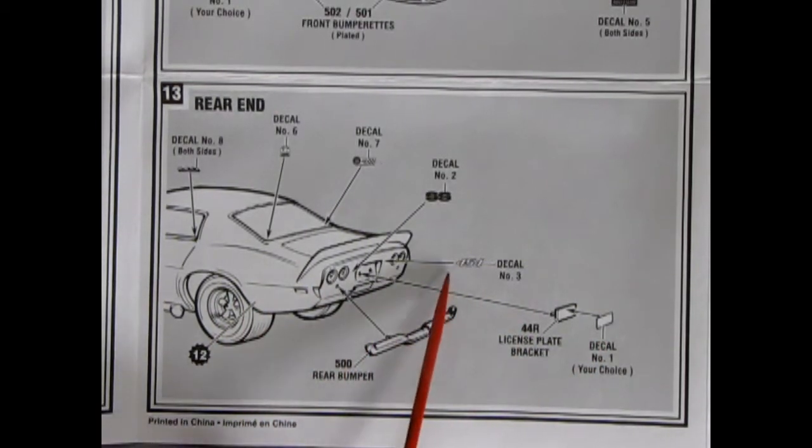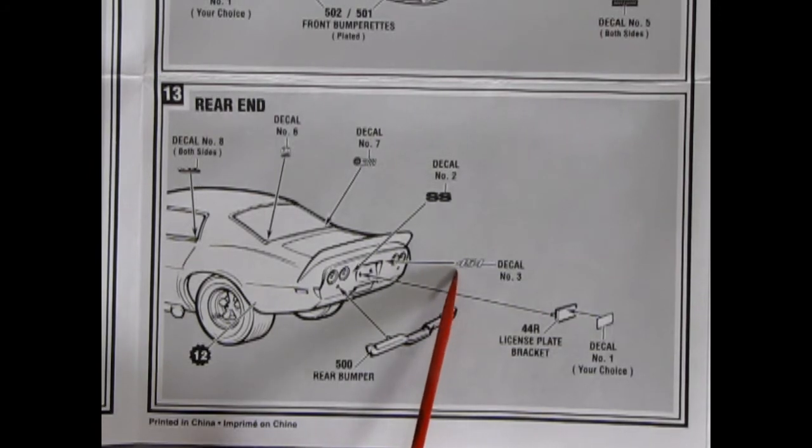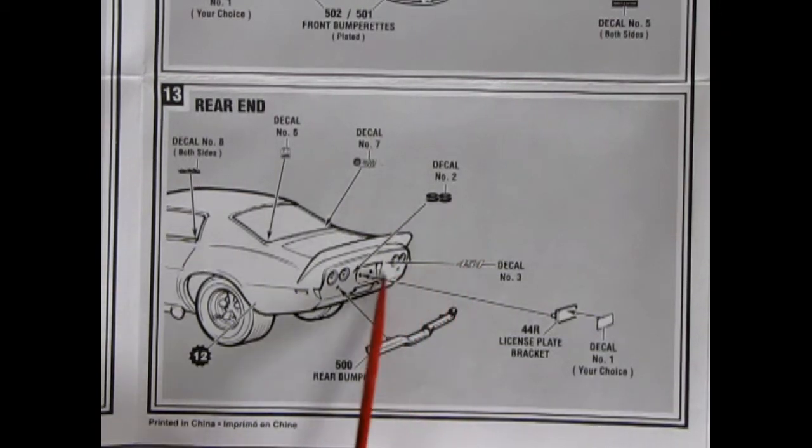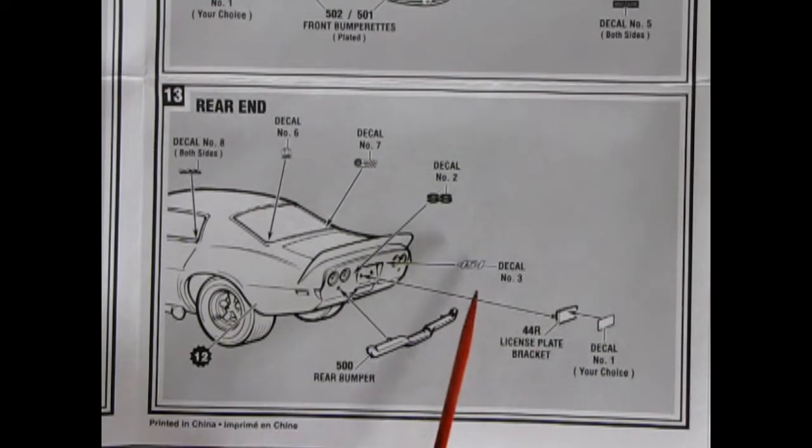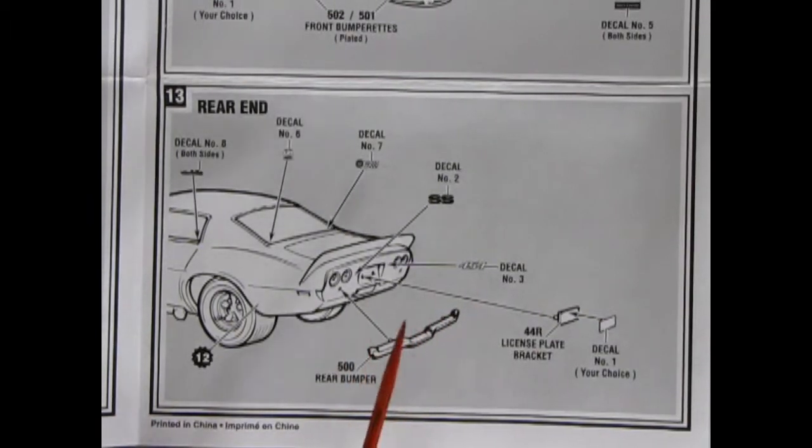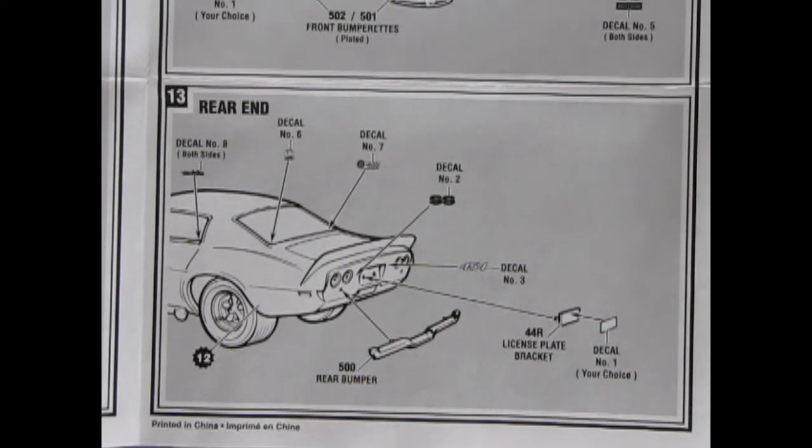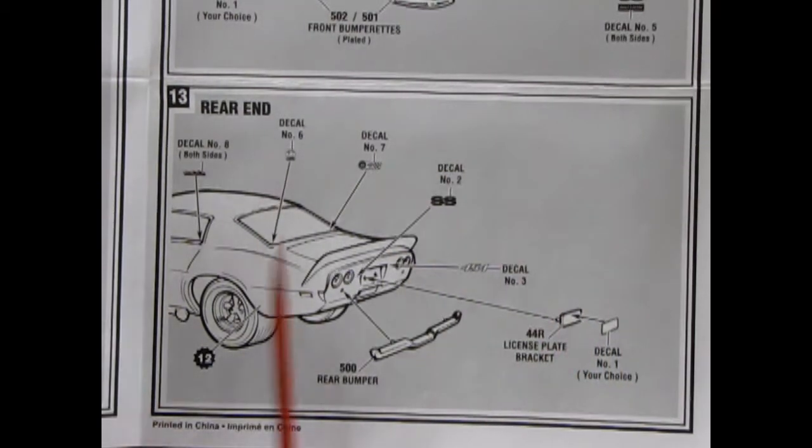Now, the reason I said I wasn't too sure is because it could be a 454 Camaro for Baldwin Motion, or Baldwin Motion could have bored out the motor to some crazy number like 500 cubic inch, or 506, or something weird. But anyway, this is basically our instructions.